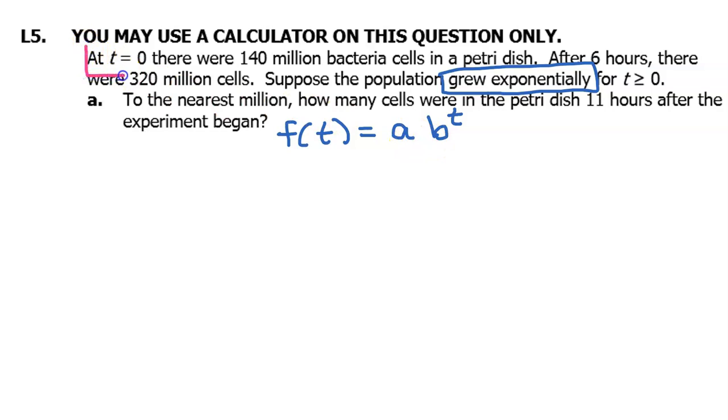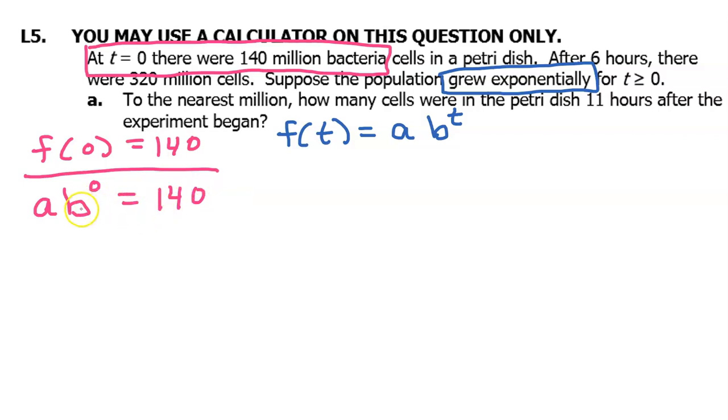They told us that at time t equals zero, there were 140 million bacteria. So they're telling us that f at zero is equal to 140 million. Let's use this and see how far we get. This means if we plug in zero for t, the answer should be 140. So here's the function, a times b to the t power. This will now become a times b to the zero power, and the answer should be 140. Well, if you raise a constant to the zero power, that's just one. So this is now a times one, which equals 140, which means that a is equal to 140. Okay, that's great. I feel like we're halfway there already.